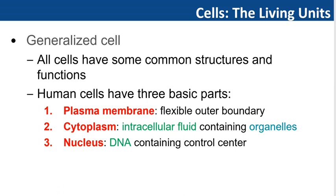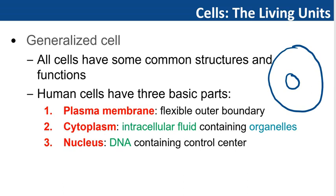All cells have some common structure and functions. The human cells have three basic parts: the plasma membrane, which is the outer boundary that separates the inside of the cell from the outside; the nucleus, which contains DNA or genetic material; and between the plasma membrane and nucleus there is the cytoplasm, which is the intracellular fluid containing the organelles.